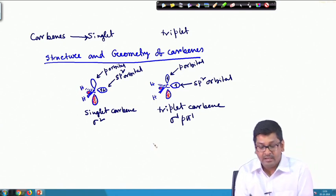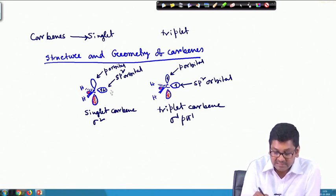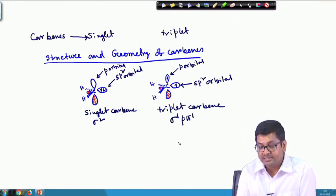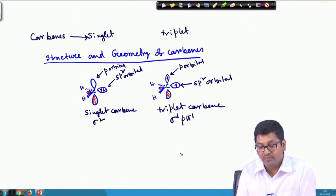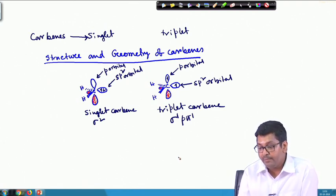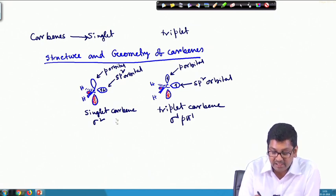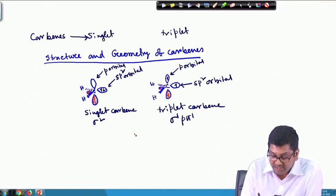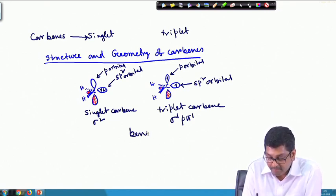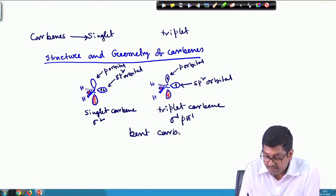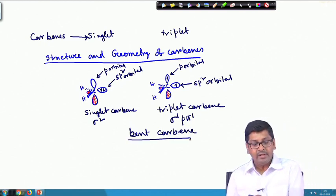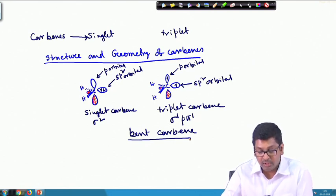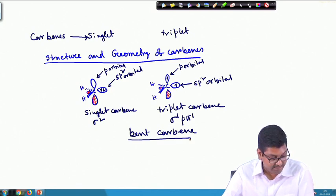In case of singlet, both electrons have been paired up, and in case of triplet, both are unpaired electrons and they are in two different orbitals. If you calculate the multiplicity, their names came as singlet and triplet accordingly. It has been found that their structures are bent — they are in general bent carbenes. Theoretically and experimentally it has been proved that they are bent in nature.